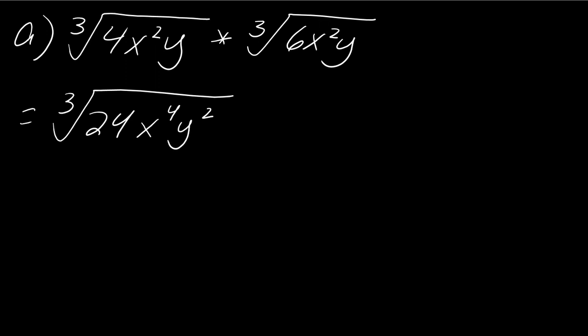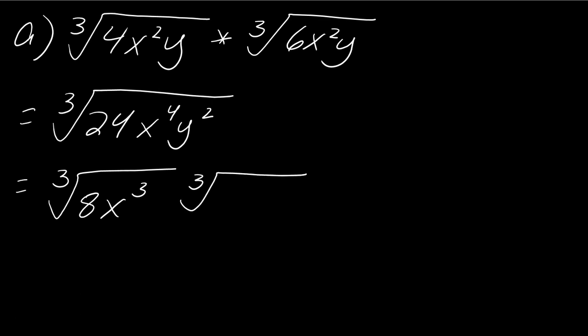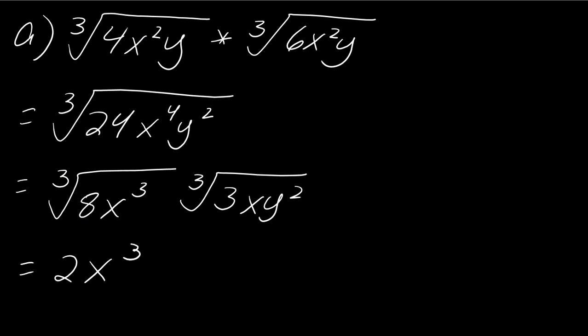When you multiply radicals together, it's entirely possible that you're going to have to simplify them. So in this case, I would simplify this. I'm just going to show you what it is that I'm pulling out of the radical to simplify. I can bring out the factors 8 and x cubed — I can actually take the cube root of these. So this will just become 2x times the cube root of 3xy squared.